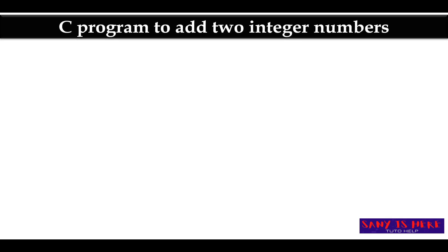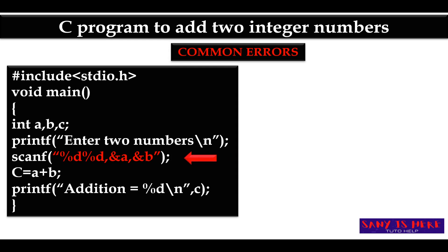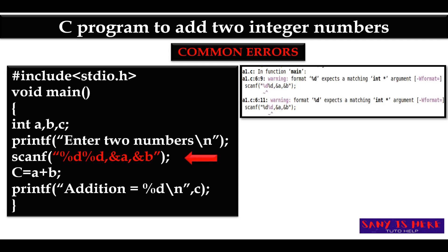The next kind of error in scanf: after writing two %d format specifiers, you must close the double quote immediately, but instead you are closing it after writing &a and &b. In scanf, you first write the format specifiers, then close the double quote. The error shown is '%d expects a matching integer argument', indicating a syntax error.